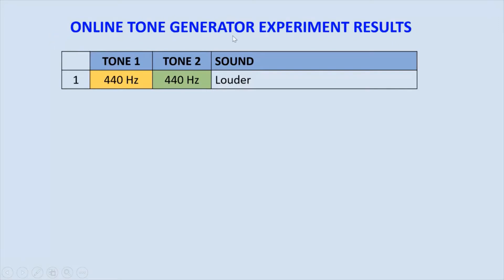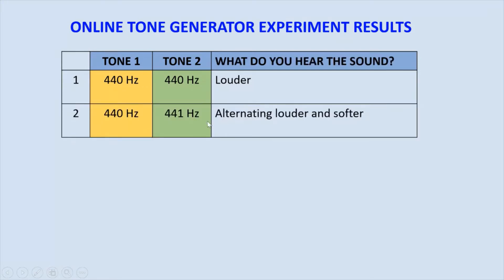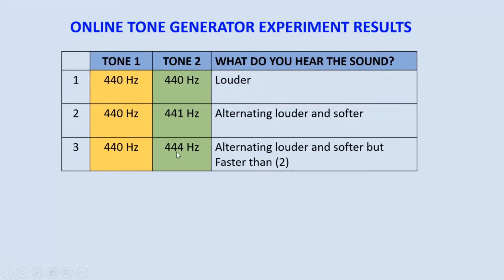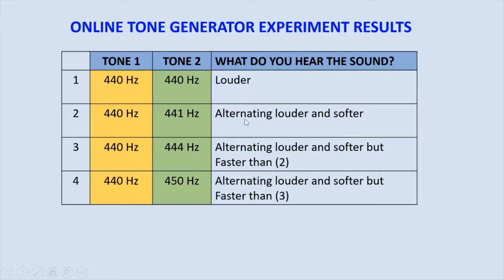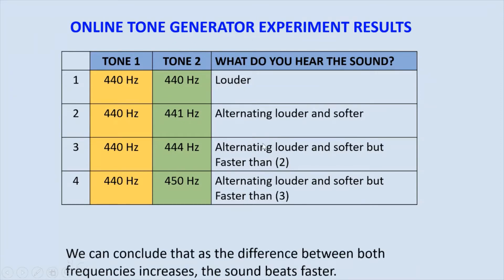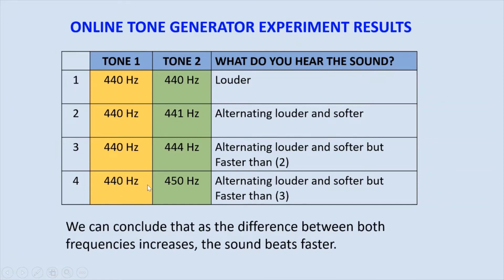For the results of the online tone generator experiment: when I played both tones at the same frequency, we heard a louder sound. When I increased the second tone by 1 Hertz, we heard an alternating louder and softer sound. When I increased the second tone up to 444 Hertz, the sound was alternating but faster. And finally, when I increased the second tone up to 450 Hertz, the sound was pulsing even faster. So we can conclude that as the difference between both frequencies increases, the sound beats faster.